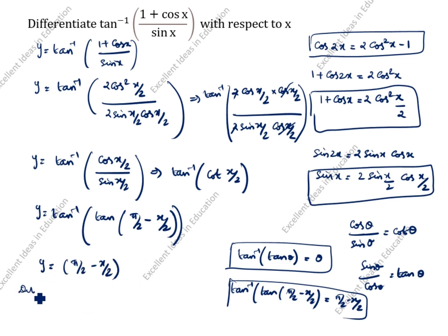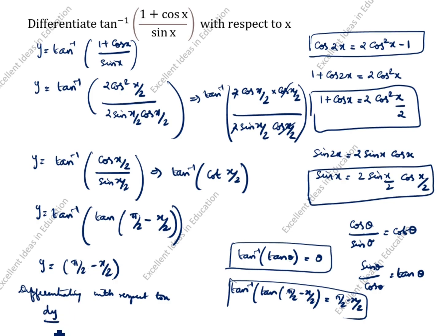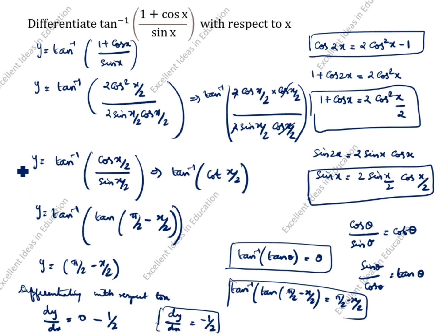Differentiating with respect to x: π/2 is a constant (90 degrees), so its derivative is 0. Therefore dy/dx equals 0 minus the derivative of x/2, which is 1/2. So dy/dx is equal to minus 1/2. This is the answer by the first method.